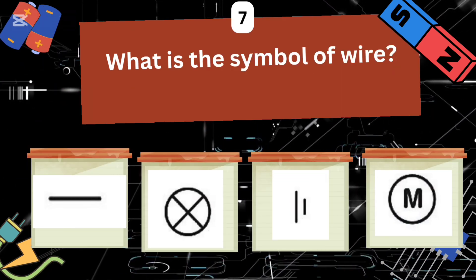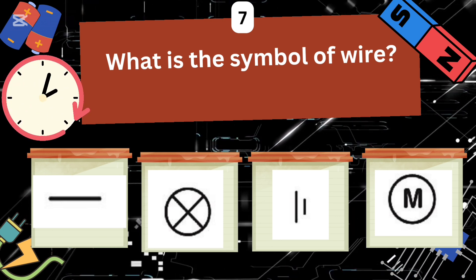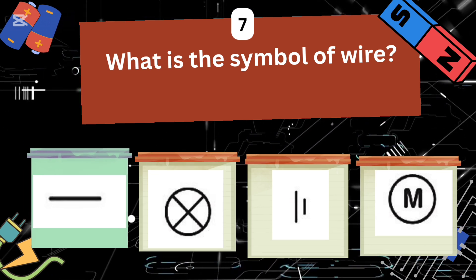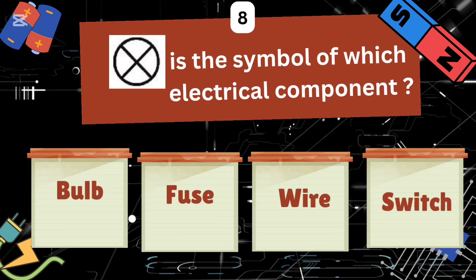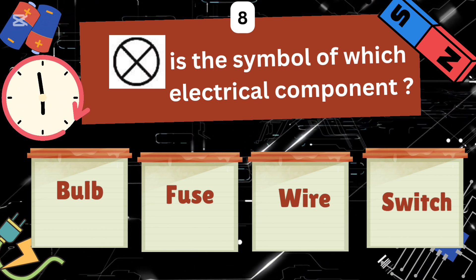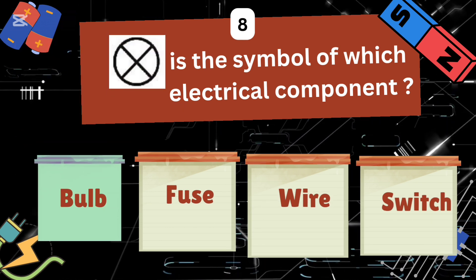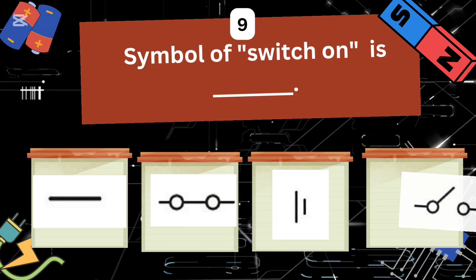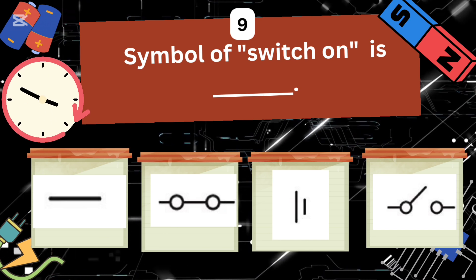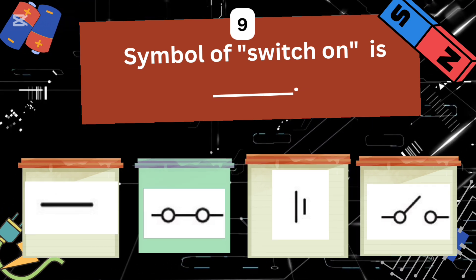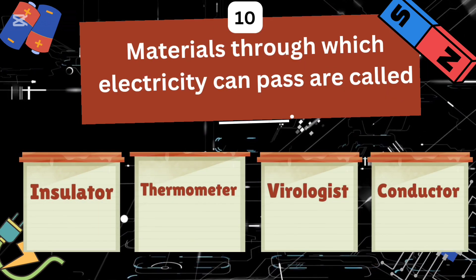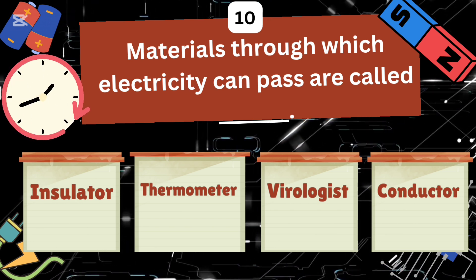It's the fuse that prevents damage to electric devices. What is the symbol of battery? What is the symbol of wire? This is the symbol of which electrical component: bulb, fuse, wire, or switch? Yes, this is the symbol of bulb. The symbol of switch on is dash — and this is the symbol of switch on.